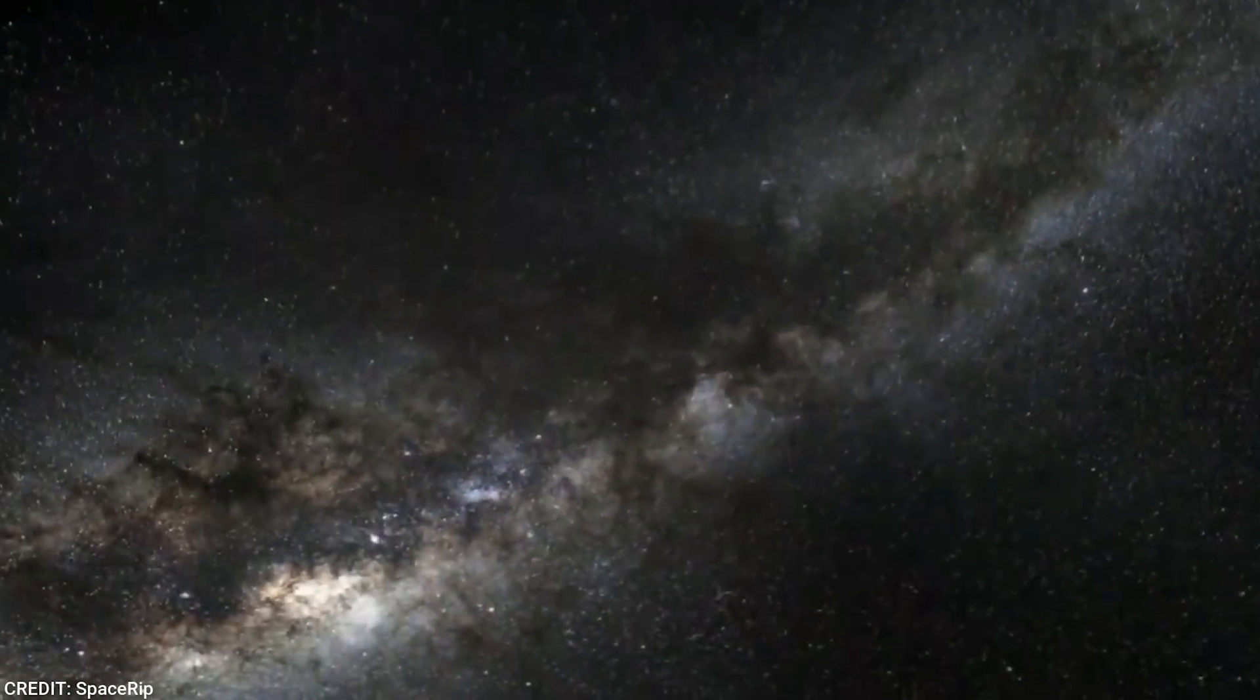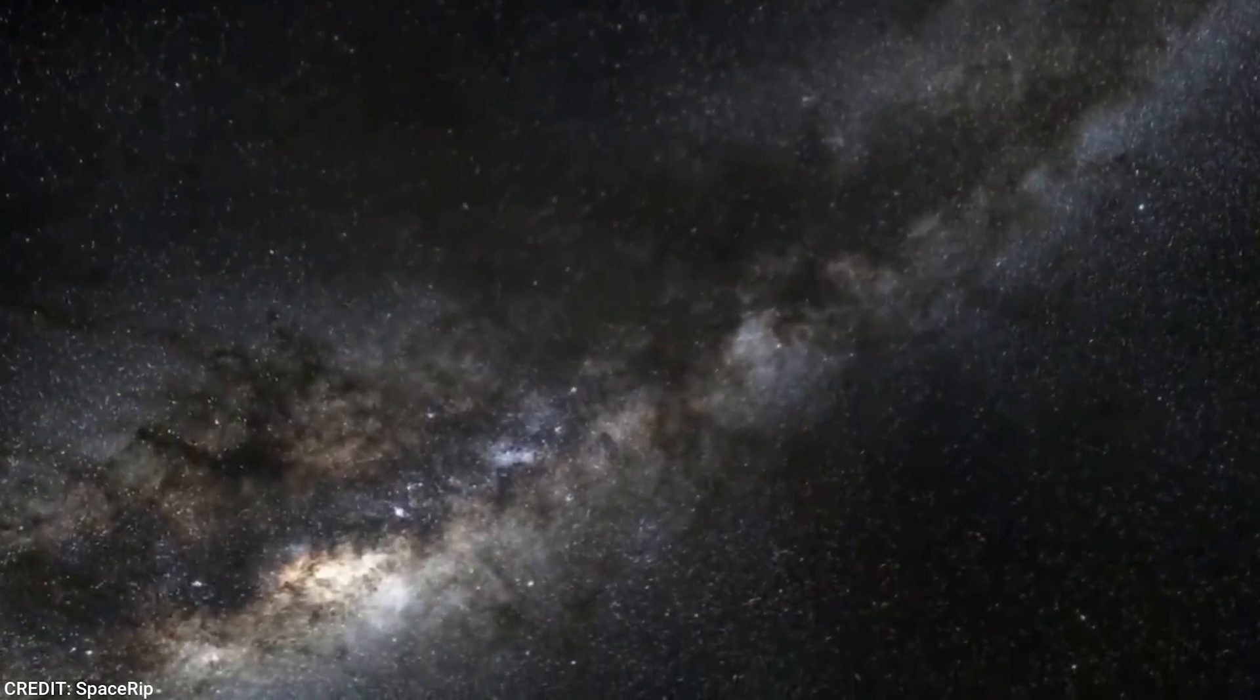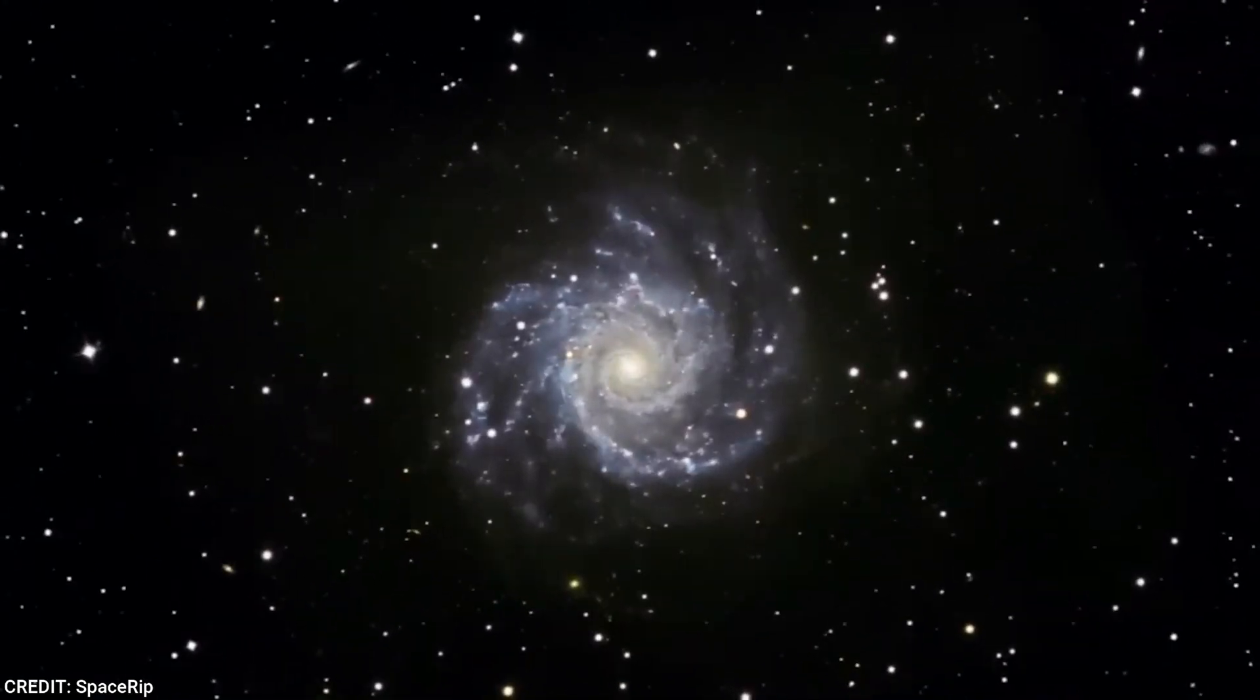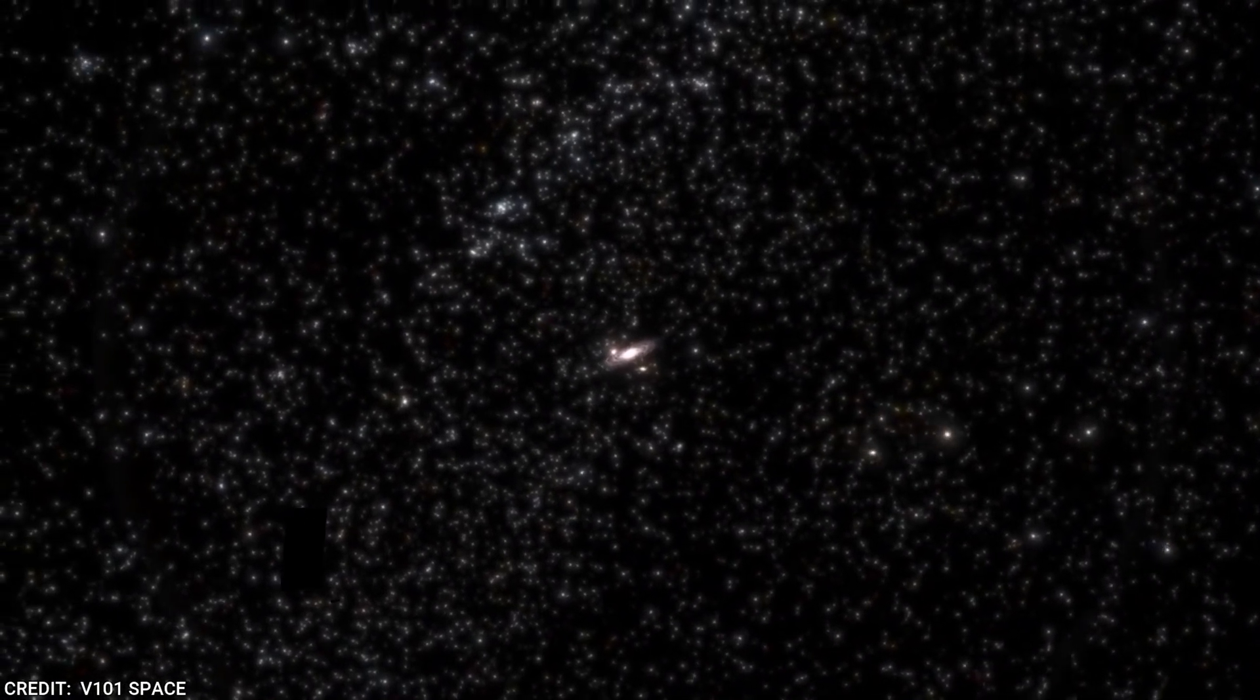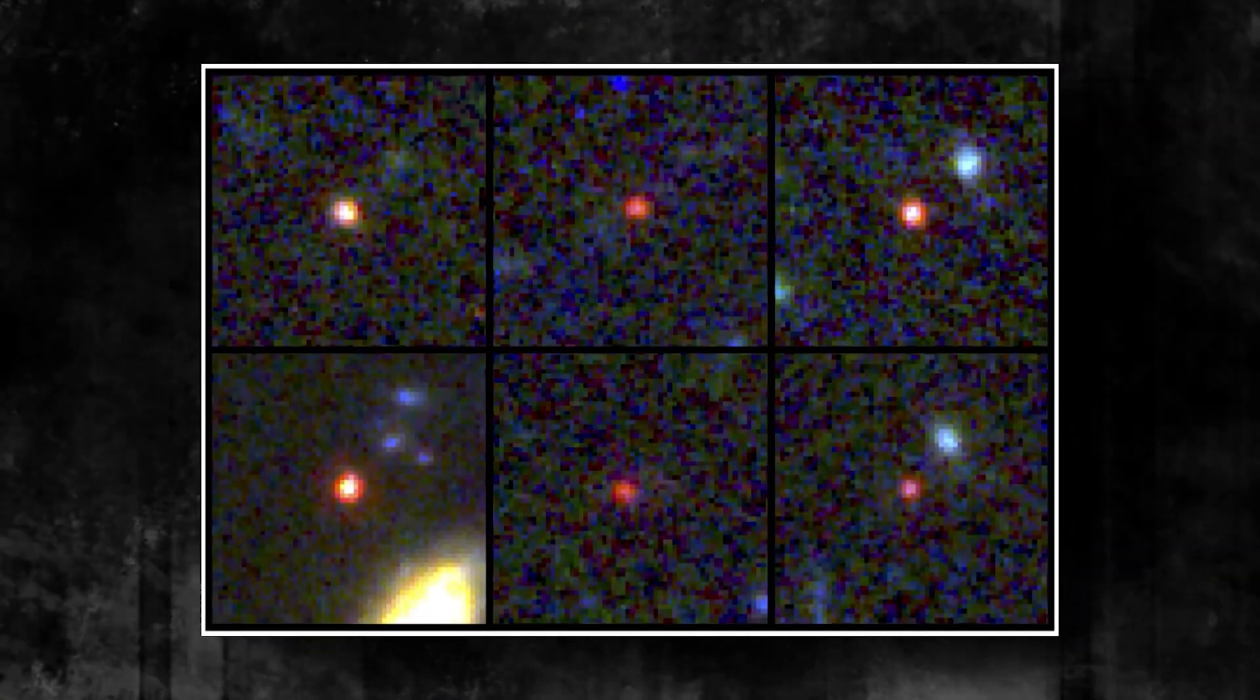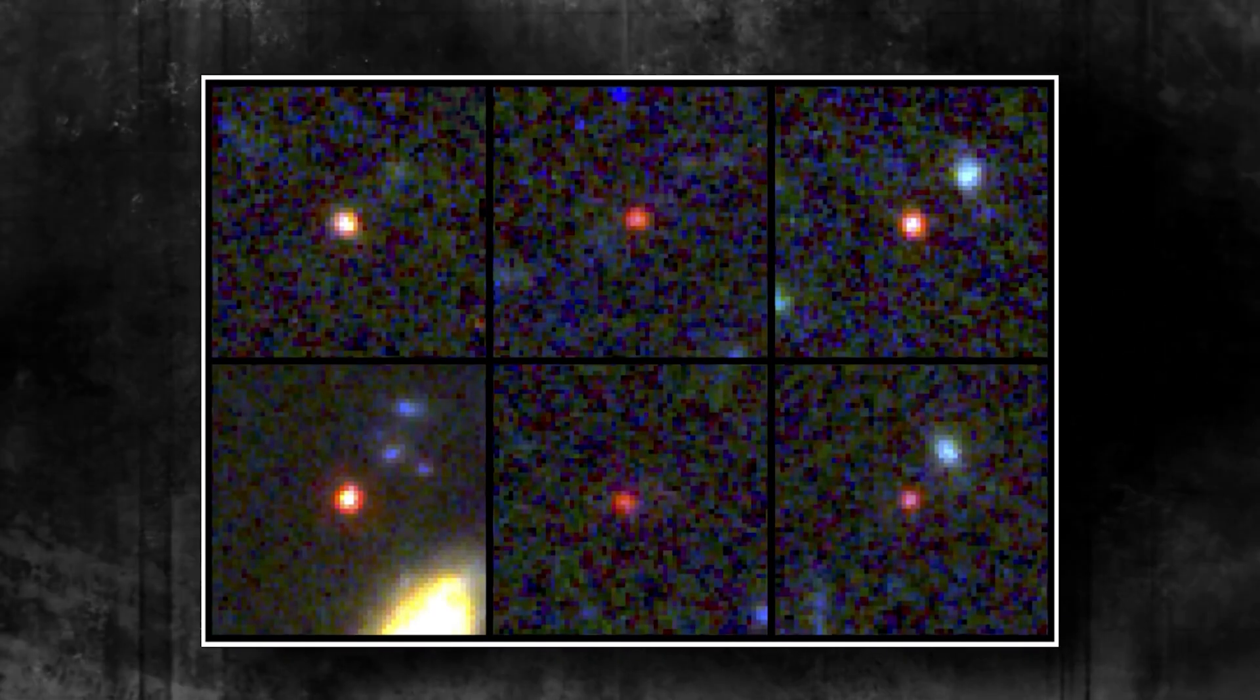Compared to the size of contemporary galaxies like our Milky Way, which is thought to have at least one hundred billion stars, the first galaxies were frequently dwarf galaxies with perhaps one hundred million stars. According to the rule, early galaxies were pipsqueaks, or at least that used to be the rule.